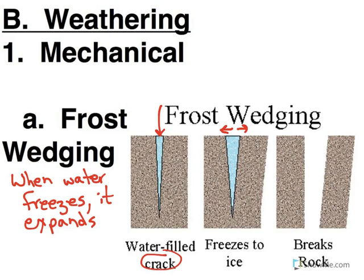it makes that crack bigger and ultimately causes it to break. An example of frost wedging is the formation of potholes. The crack in the asphalt lets in the water, the water freezes, and the asphalt breaks apart.